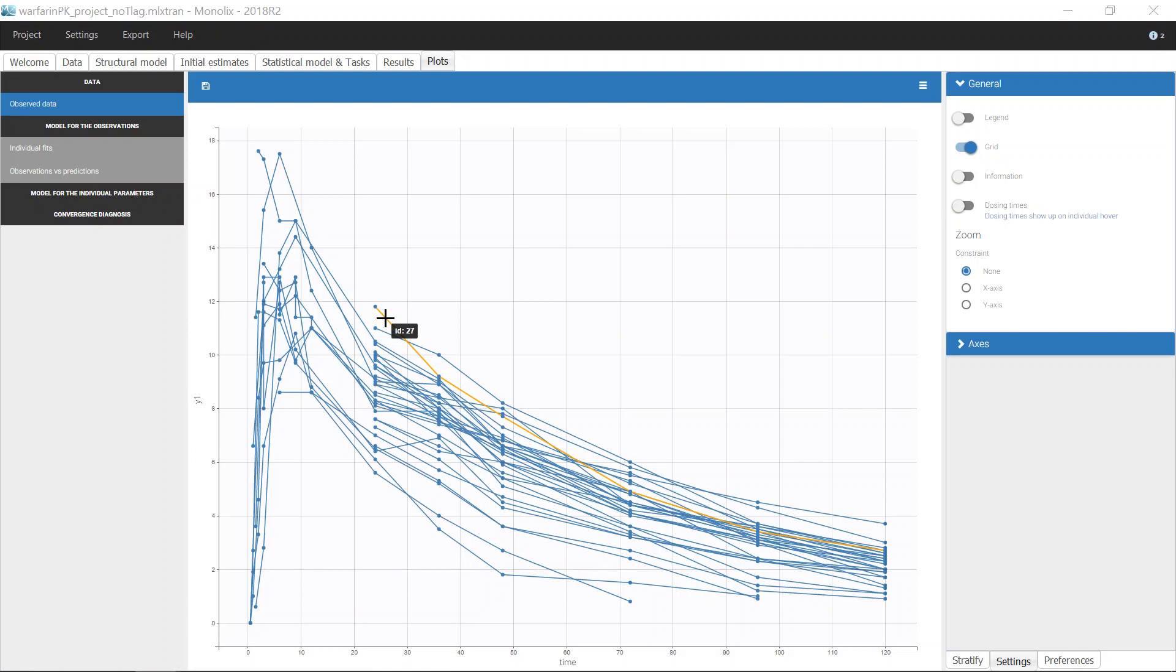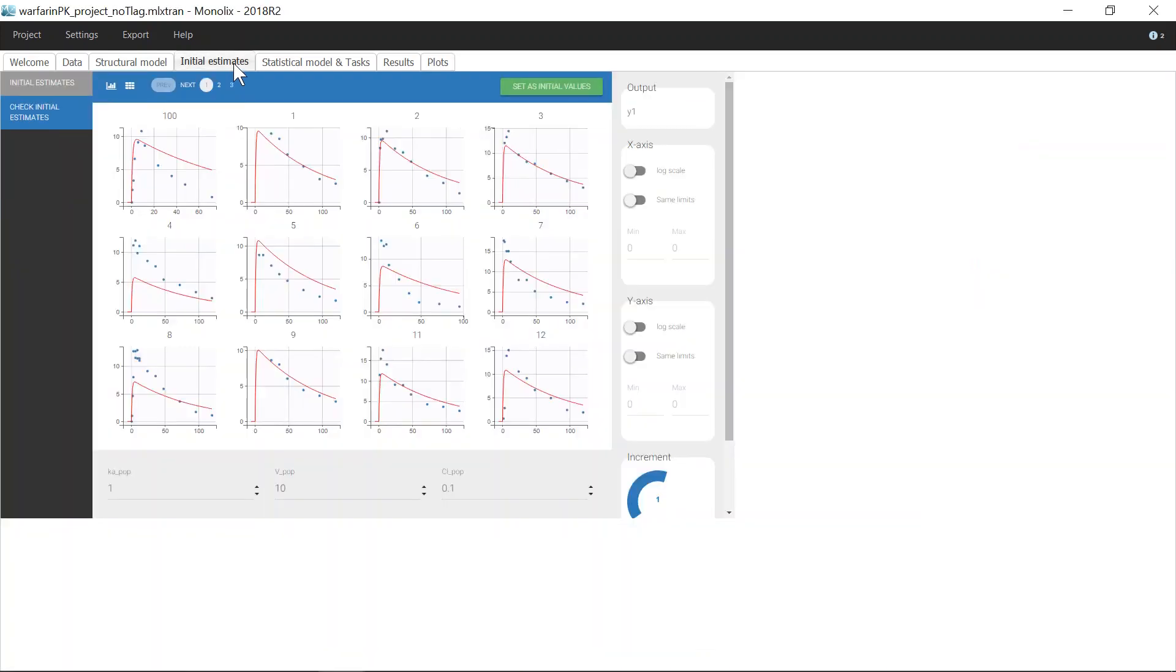But what if I have prior information on the value of Ka-pop? For example, let's assume that I know from a previous study that the absorption rate is close to 1. I can take into account this prior information by changing the estimation method in the tab Initial Estimate.